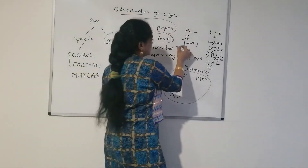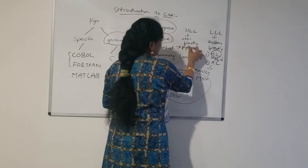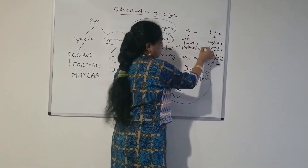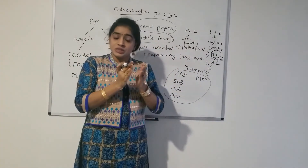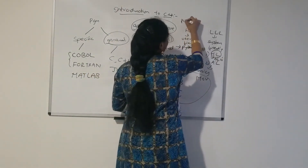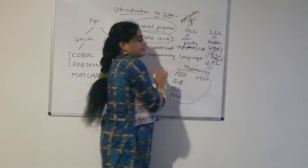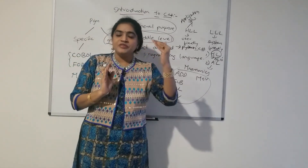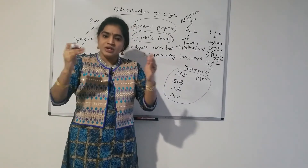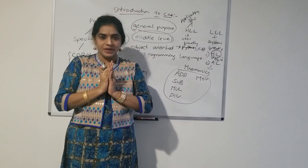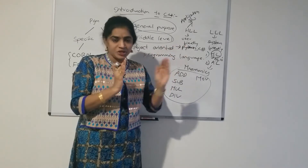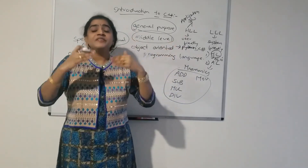High level programming languages like C, C++, and C# are all user-friendly. By using high level programming languages we can develop application software. For example, consider a bank application — it has many modules and functionalities. All those applications come under application software, and we develop them using high level programming languages.